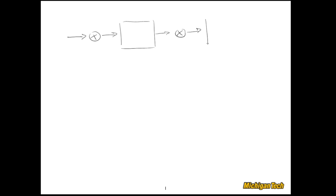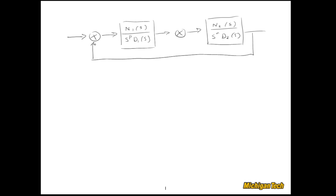To get started, let's draw the block diagram of the system we'll be considering. We have a controller written as a rational function with numerator N1 and denominator s^p · D1 — factoring out all poles at the origin. We do the same for the plant: N2 / (s^r · D2). This is a unity feedback system with a reference input and a disturbance input.